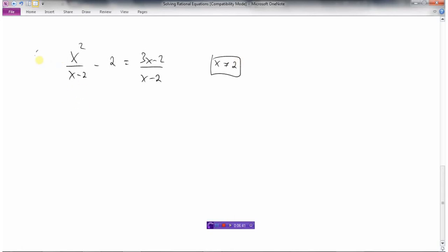To get rid of the fractions, I need to multiply all the terms by x minus 2. This will conveniently cancel out there and just leave x squared minus 2 times x minus 2 equals here. The x minus 2's cancel out again, and I'd just be left with 3x minus 2.